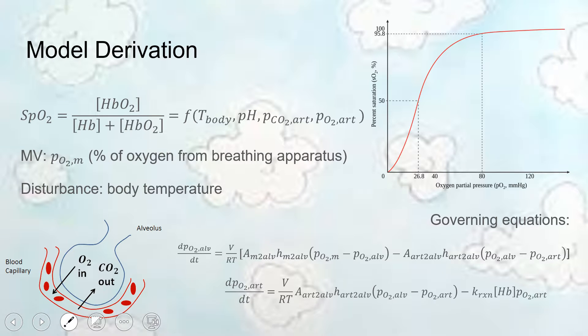So, the variable that we're controlling, it's called the SpO2, and essentially that's just the percentage of oxygenated hemoglobin, and literature values show that it is a function primarily of the body temperature, the pH of the body, as well as the partial pressures of carbon dioxide and oxygen within the arteries, and those relationships are shown by that graph.